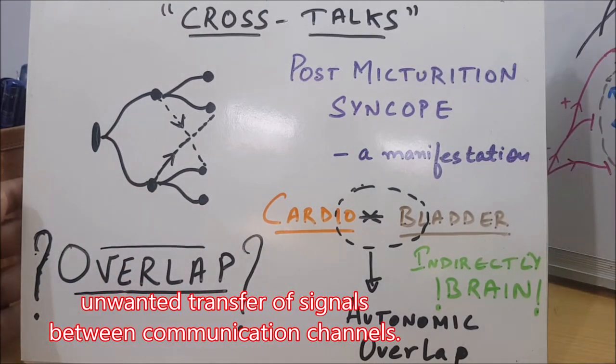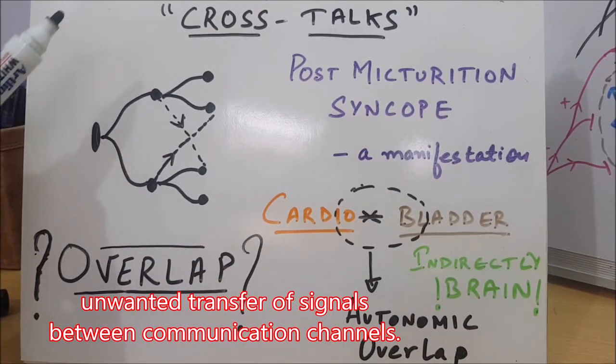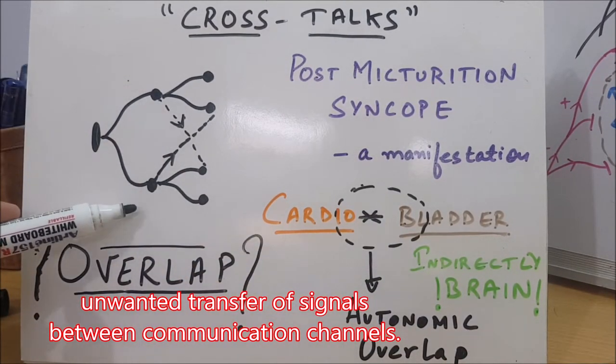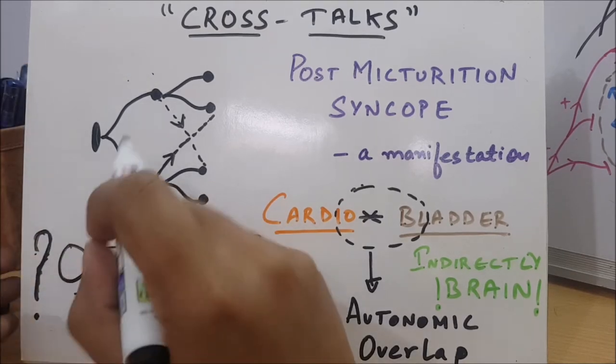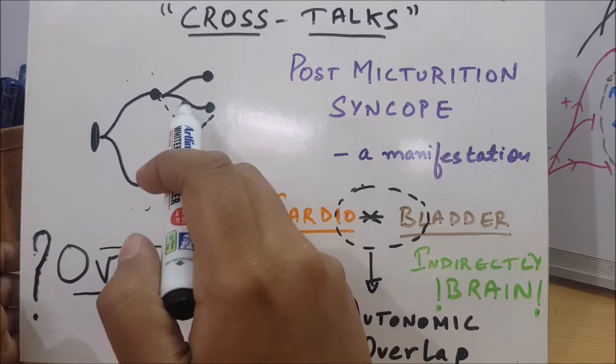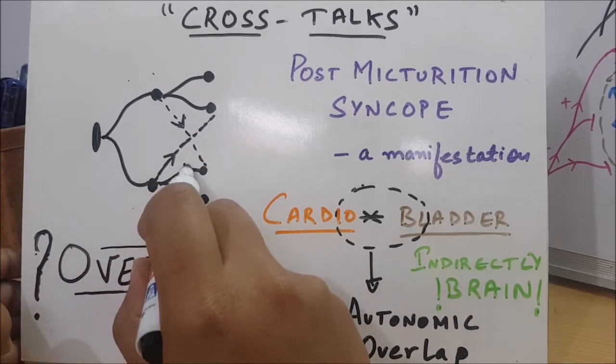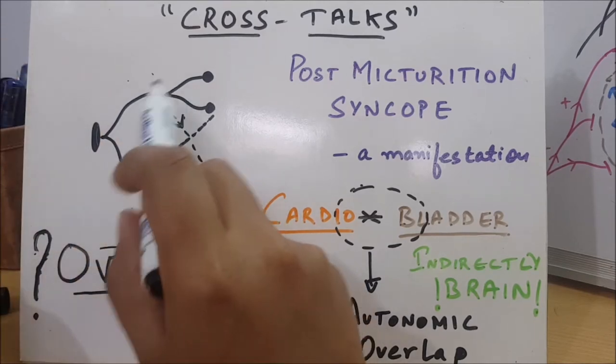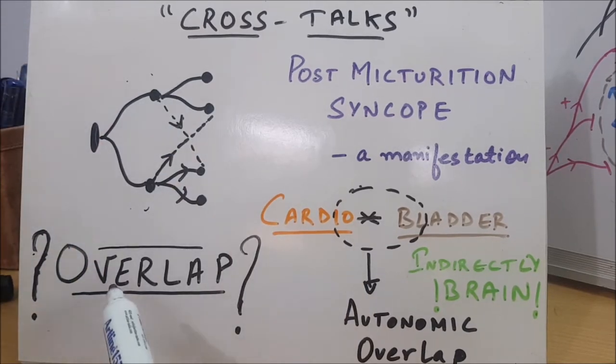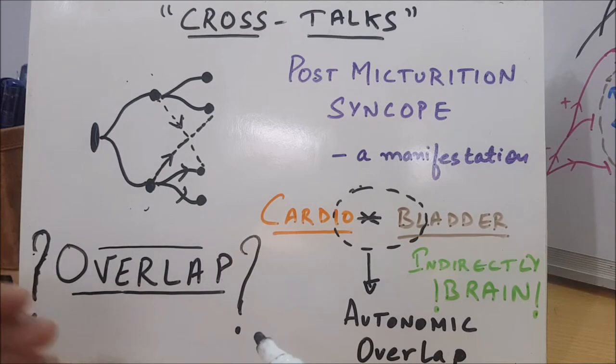Let us take this as circuit A and circuit B. The signals are going forward here and here, like this. But unintentionally there is an overlap. Can we call it an overlap? These circuits are talking among each other, or we can say they are overlapped.